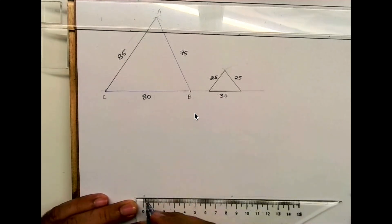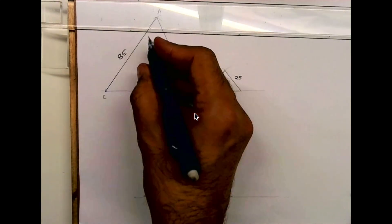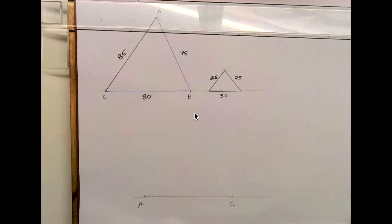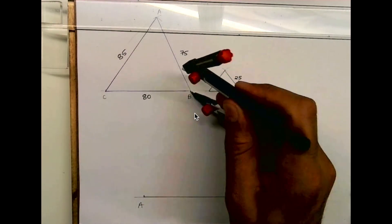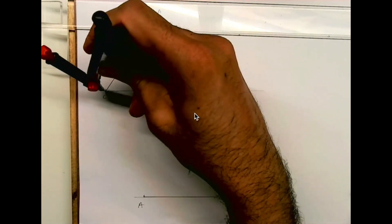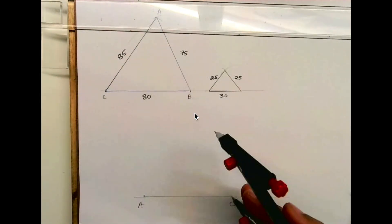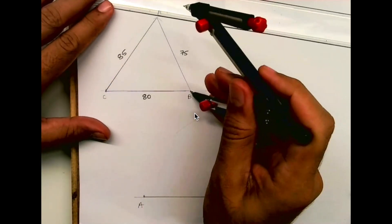We will draw 85 at the bottom. Always remember the maximum side will come down, so AC will be down. Then we'll draw a triangle with the required sides 80 and 75. We will cut from respective points to get the triangle.